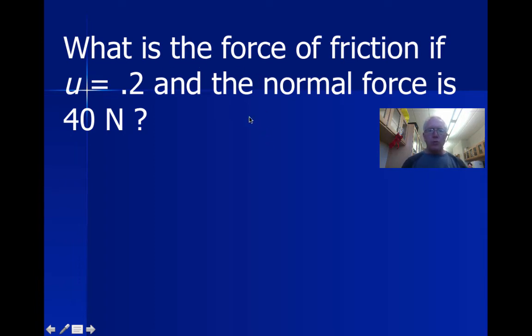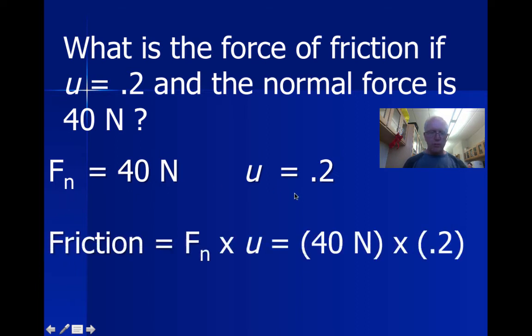What is the force of friction if mu is 0.2 and the normal force is 40 Newtons? Well, as always, the first step to a problem is identifying the information. So here I have identified the normal force and I have identified the coefficient of friction. Multiply the two together, and in this case the friction is 8 Newtons. I hope that makes some sense to you.